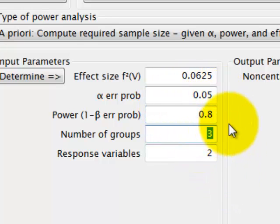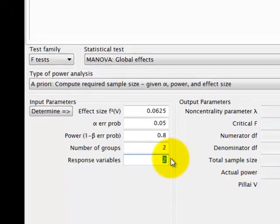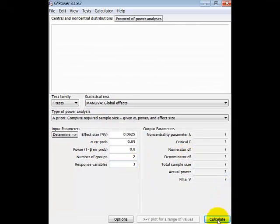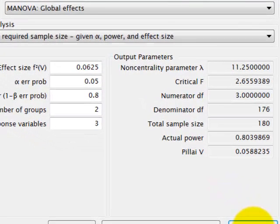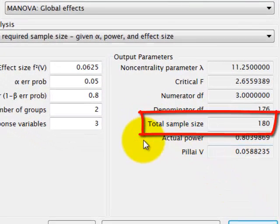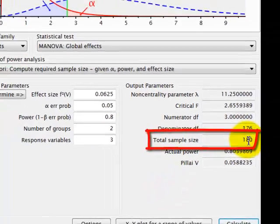And the critical alpha is 0.05. We never change that. So the number of groups you have, that's your IV, that's two. Response variables is your DV, that's three. If you cross your fingers, you hit the calculate button. And according to G power, your minimum sample size should be around 180. I'll say that again. Minimum sample size should be a minimum of 180. You can have more than that.